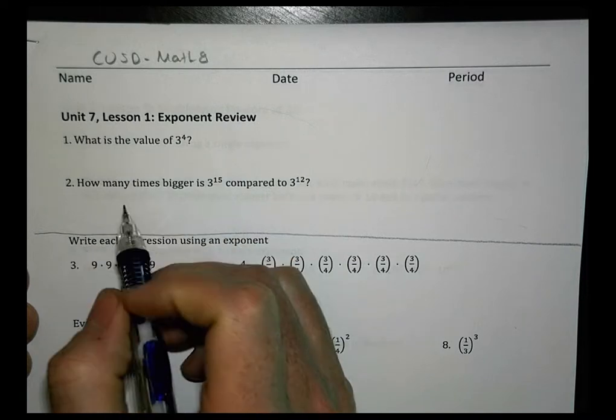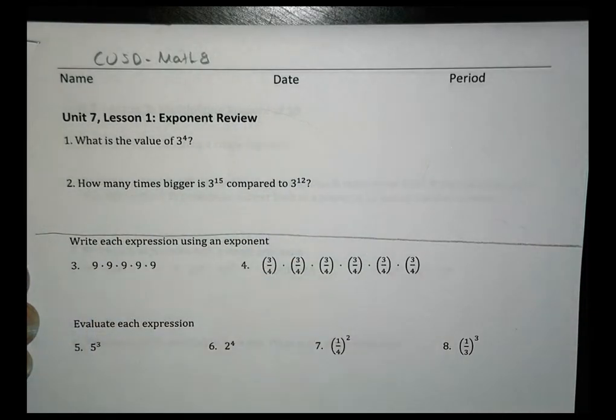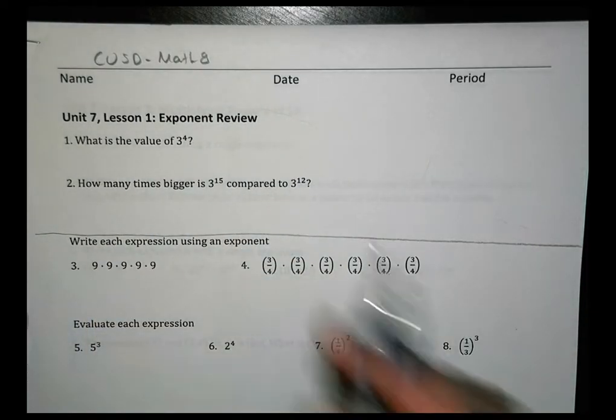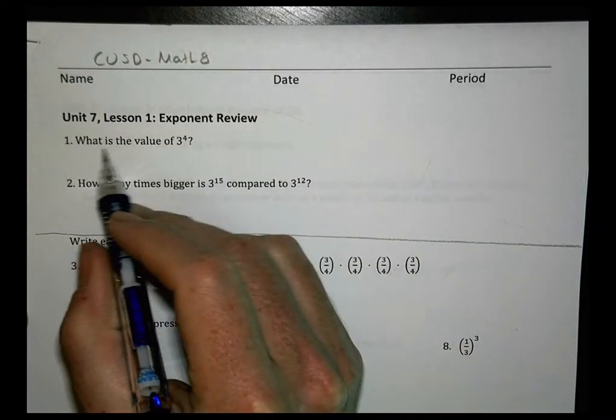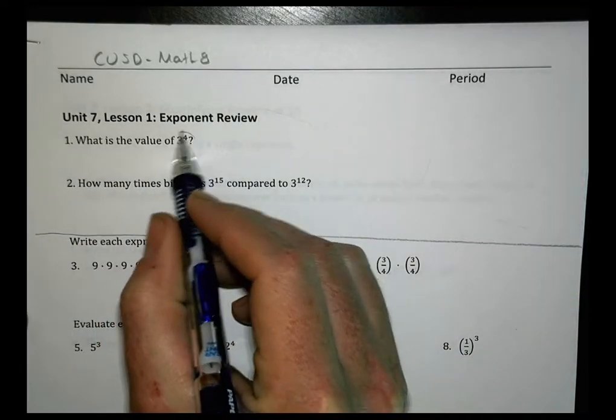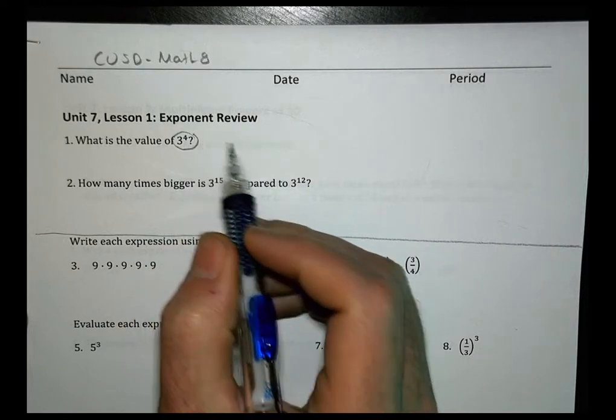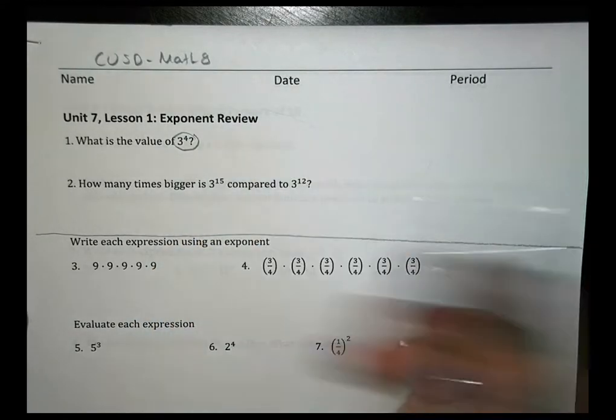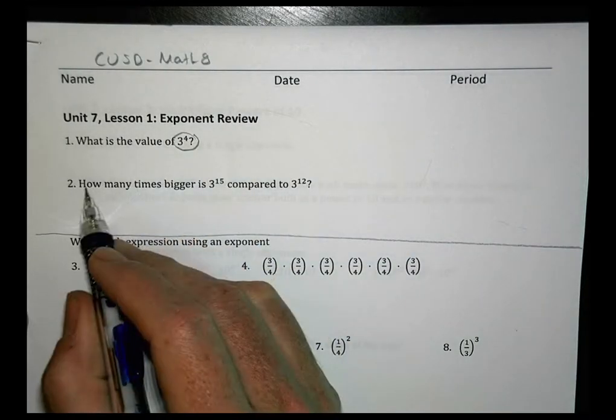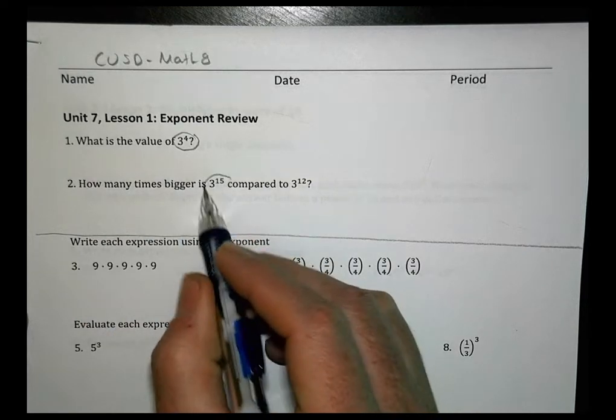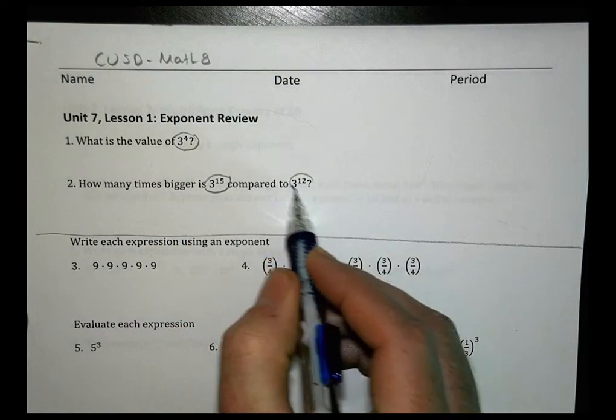And so as always, the first two are the questions that go with the lesson to kind of see how much you got. I usually skip those ones there. The first one just says, what is the value of 3 to the 4th power? You need to evaluate that one. Then, how many times bigger is 3 to the 15th compared to 3 to the 12th?